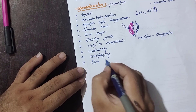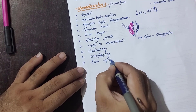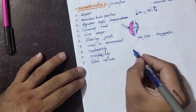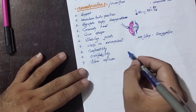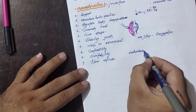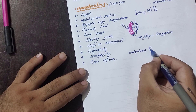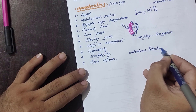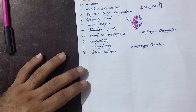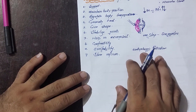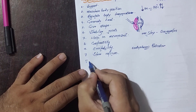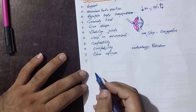Muscles also store calcium. While calcium is mainly stored in our bones and teeth, inside the muscle cells we have endoplasmic reticulum, and a large amount of calcium is present in that endoplasmic reticulum. This calcium is important for the easy contraction of these muscles.